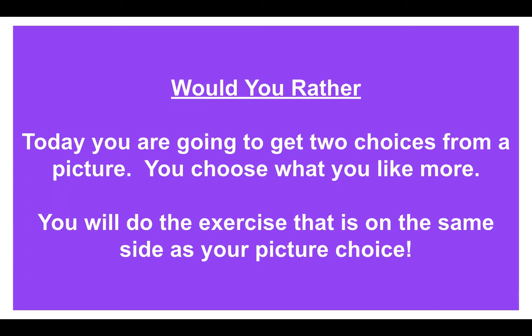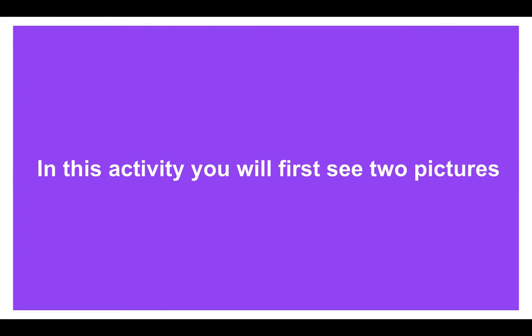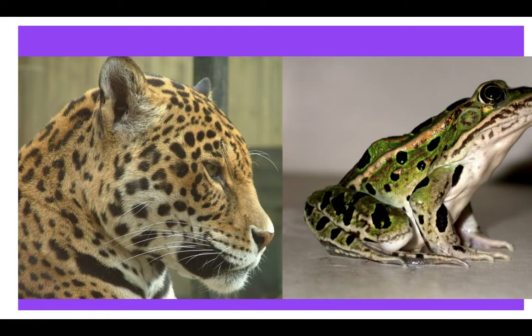Whatever picture you like the best, whatever side that picture is on, is the exercise you'll do. So it'll look a little bit like this. You'll have two pictures to pick from, like a leopard and a frog. If you like the leopard or the frog the best, that's what you're going to pick from.